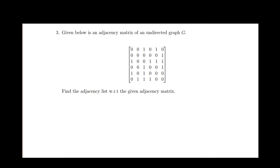Let's solve another problem related to graph theory. Given below is an adjacency matrix of an undirected graph G. Find the adjacency list with respect to the given adjacency matrix. This is a 6×6 adjacency matrix, so there are 6 vertices in the graph G.